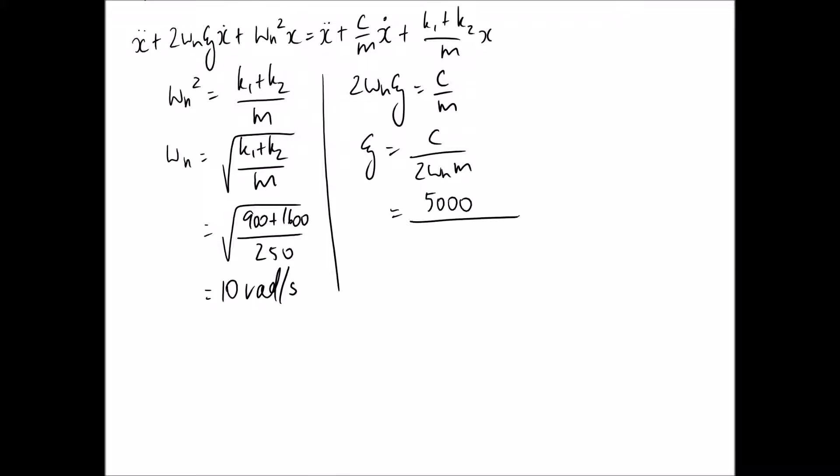So c substituting into this equation, it was 5000 divided by 2 times 10, which we just worked out, times the mass of 250. And this works out to a damping ratio of exactly 1. And thinking about the type of motion that this represents, a damping ratio of 1 means we have a critically damped system.